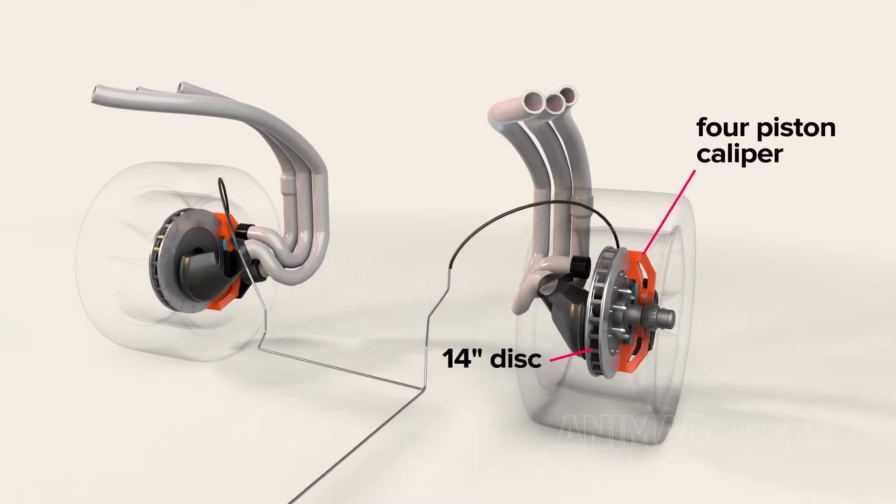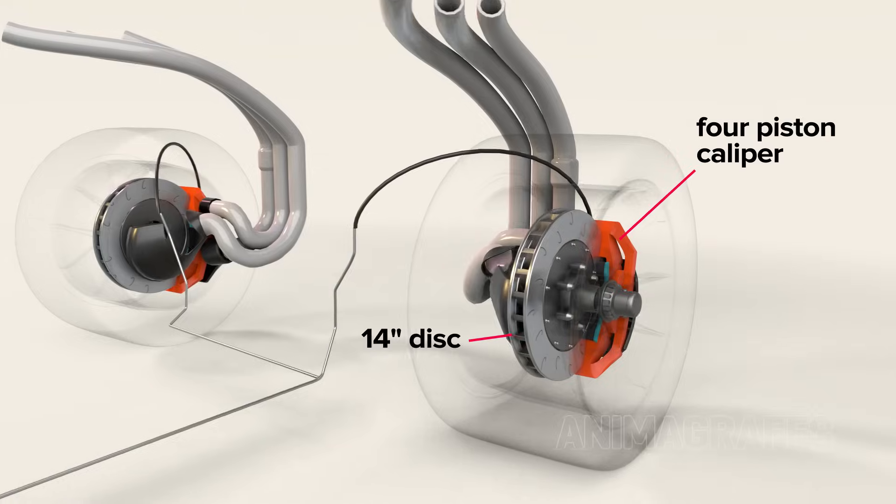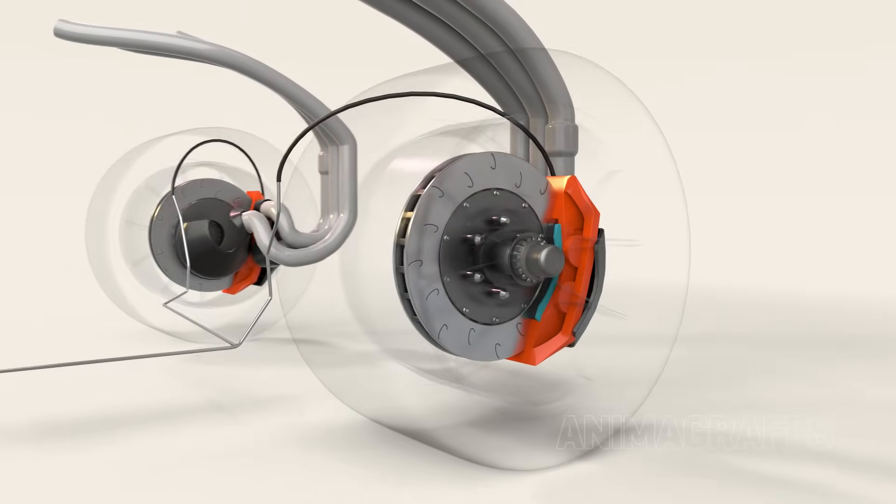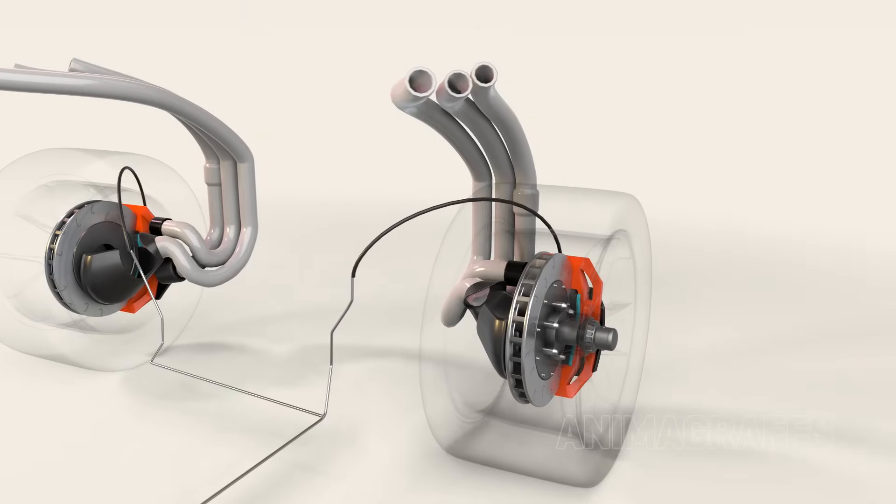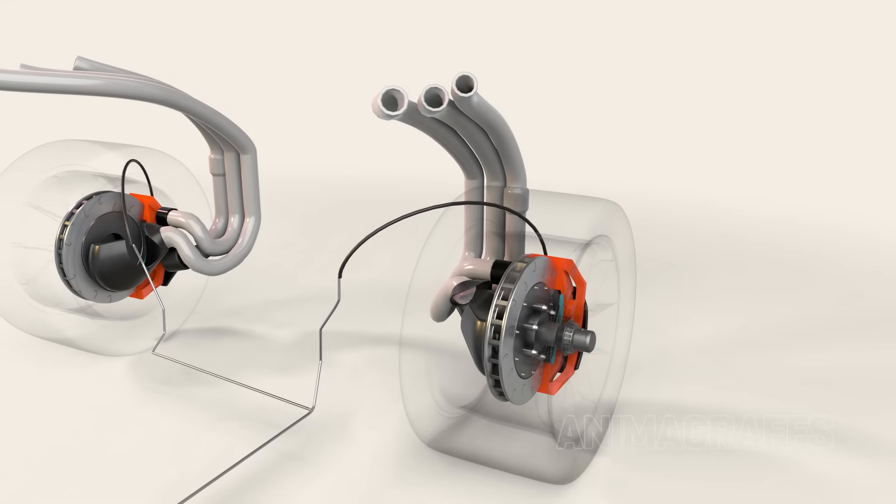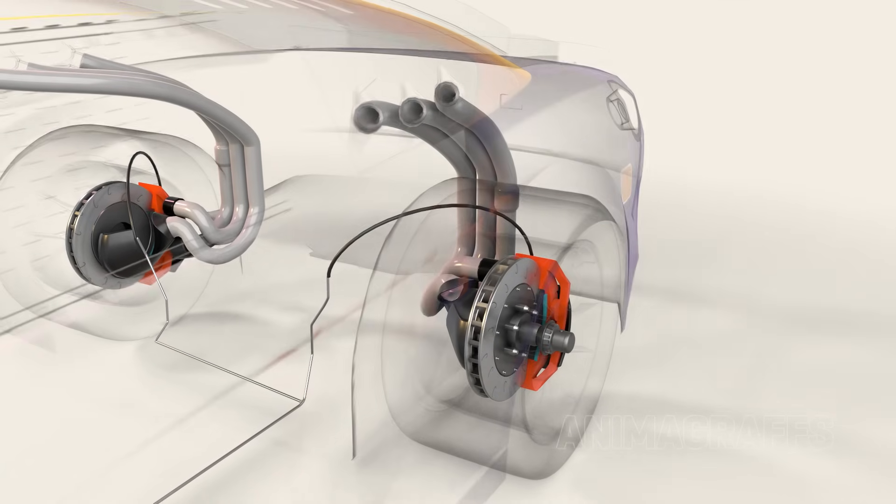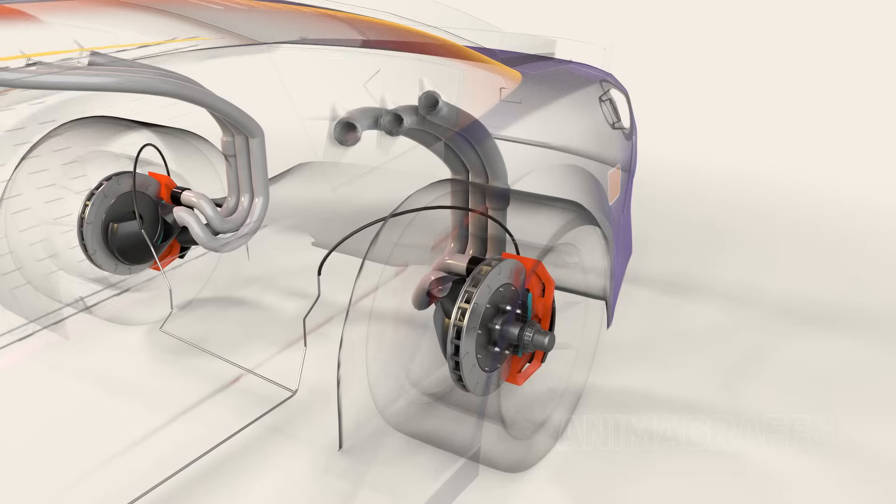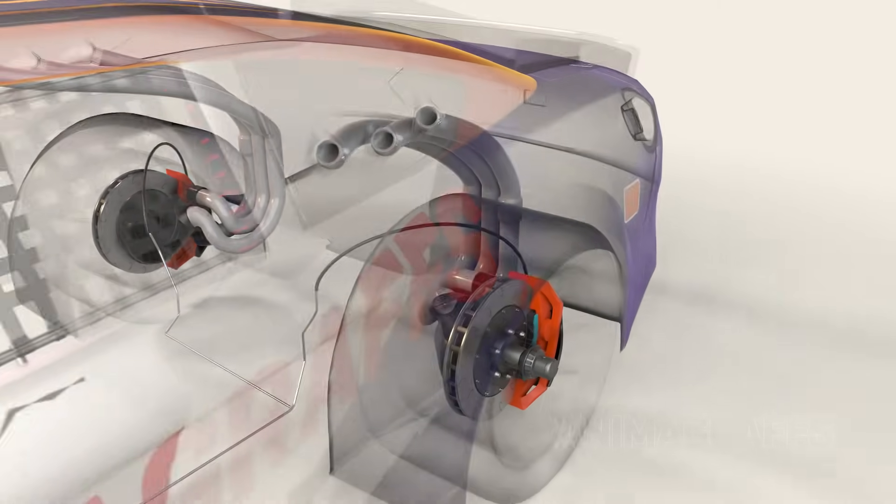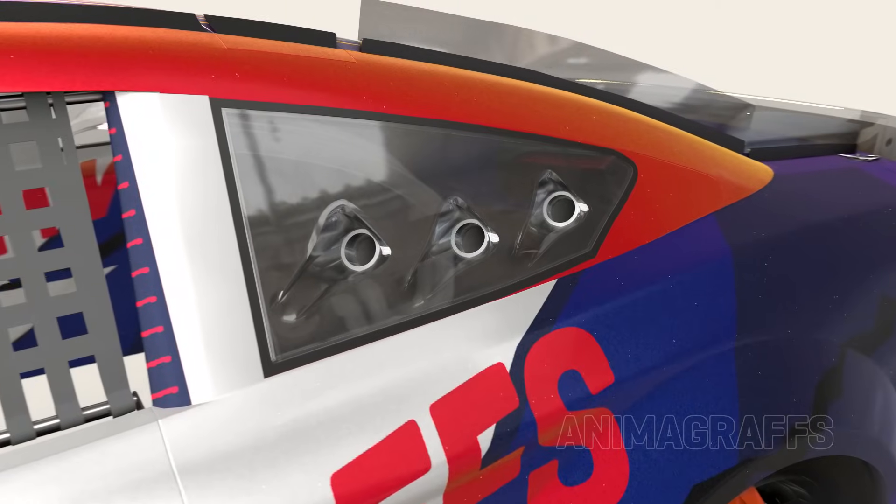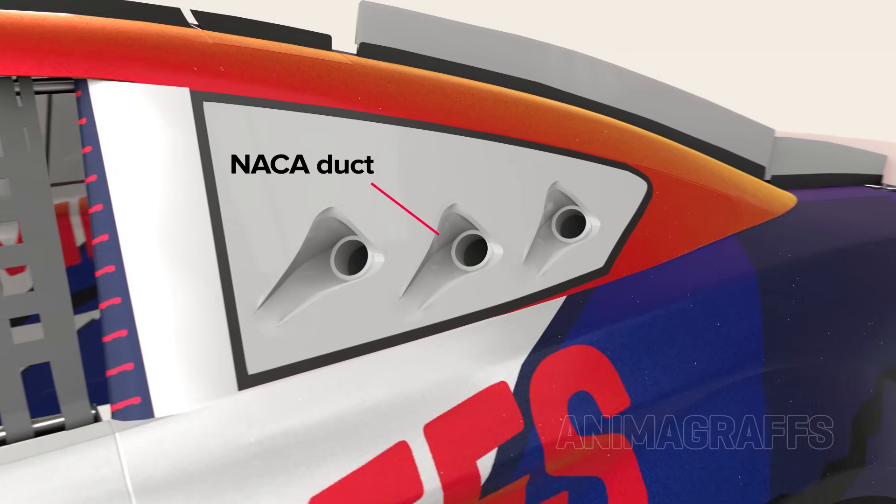In the rear, four piston brake calipers are matched to 14 inch rotors. Cooling ducts are situated around the brake assembly just as with the front, but the intake slots are in the rear quarter window. The specially shaped opening is called a NACA duct.